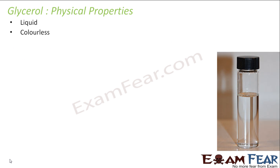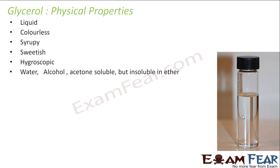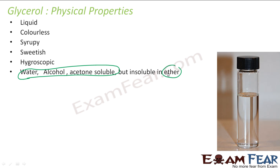The physical properties of glycerol: it is a colorless, syrupy liquid with a sweetish taste. It is hygroscopic. It is soluble in water, alcohol, and acetone, but insoluble in ether. Note that this differs from simpler compounds which are only water-soluble. Glycerol boils at 563 Kelvin.